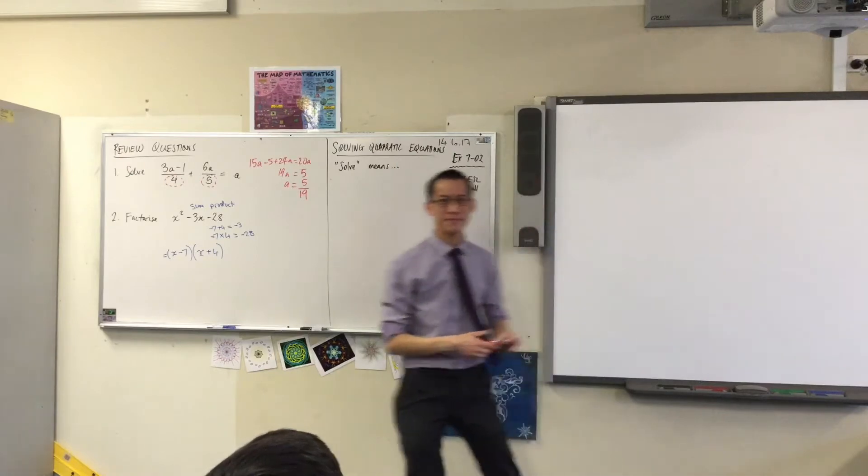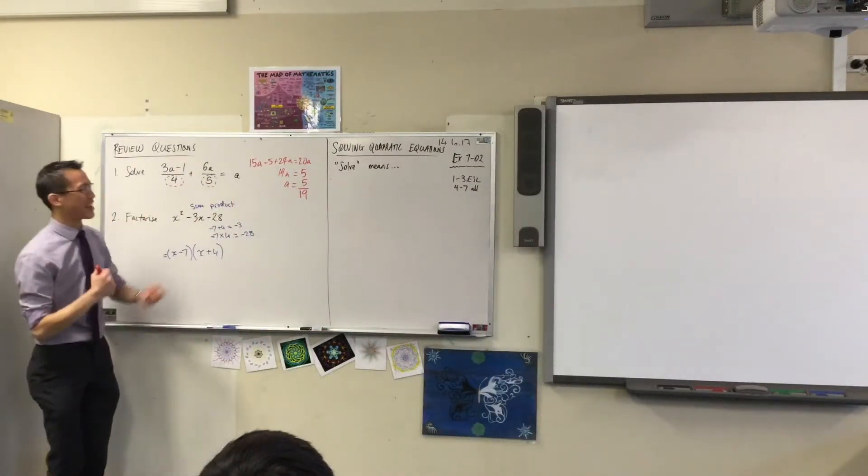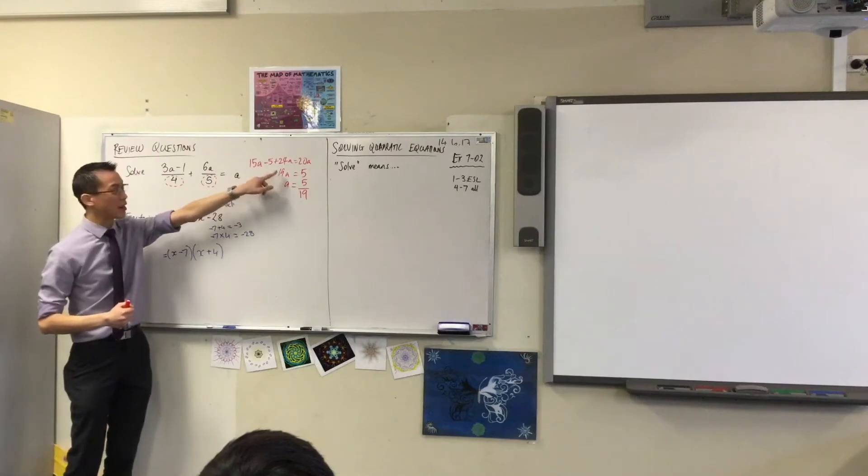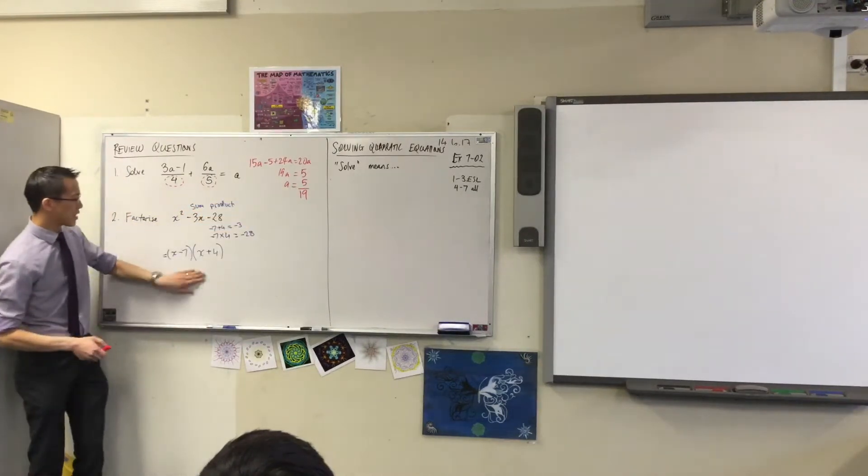Because it's the right. Because we are trying to make A the subject, so you want to get A on its own and then divide through. Okay.